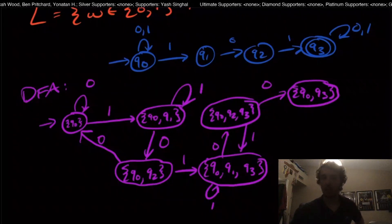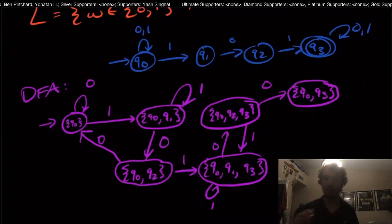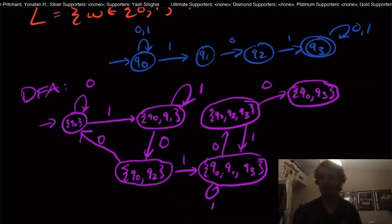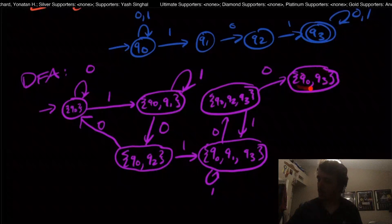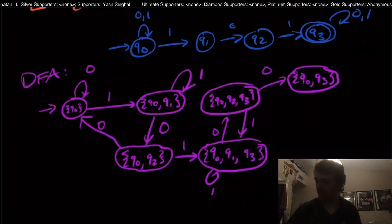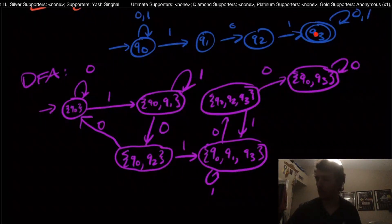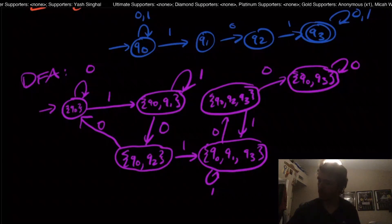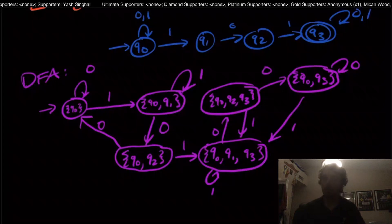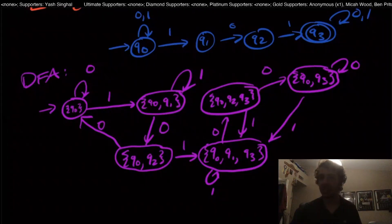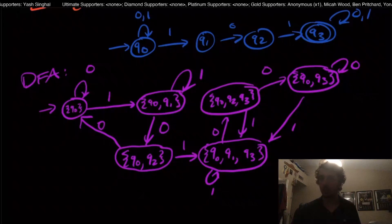If this is going a little fast, I recommend going through each transition and verifying it yourself. State {q0, q3} on zero: both go to themselves, so it stays in {q0, q3}. On one: q0 goes to q1 as well, so we go to {q0, q1, q3}. Now we've actually have every single state that could be constructed here with their zero and one transitions filled out, so we're done making the states and transitions.